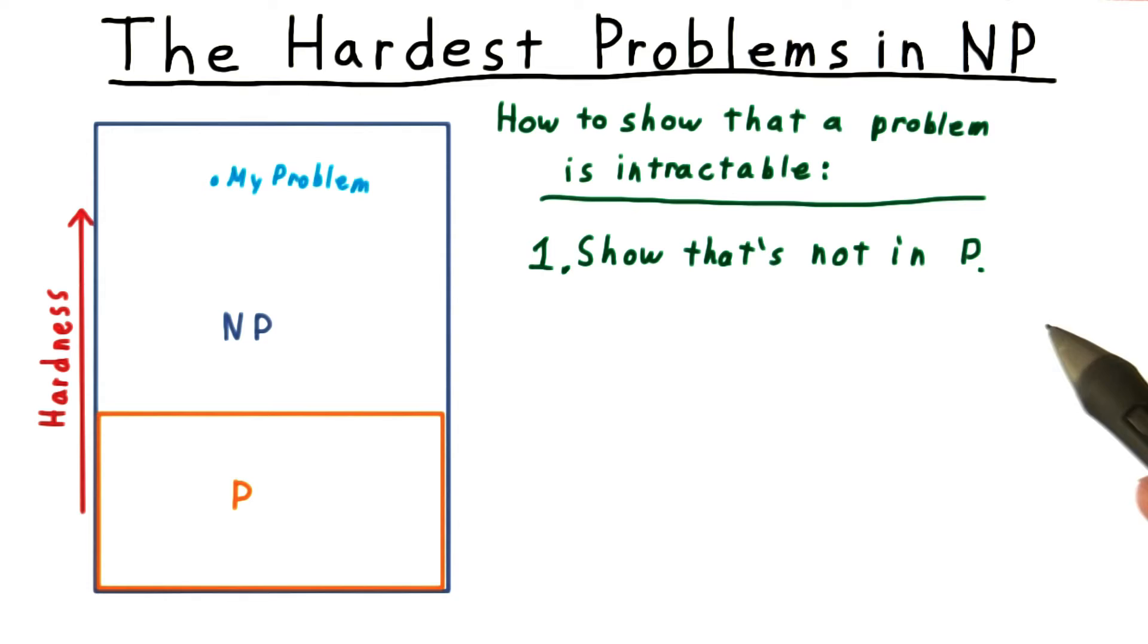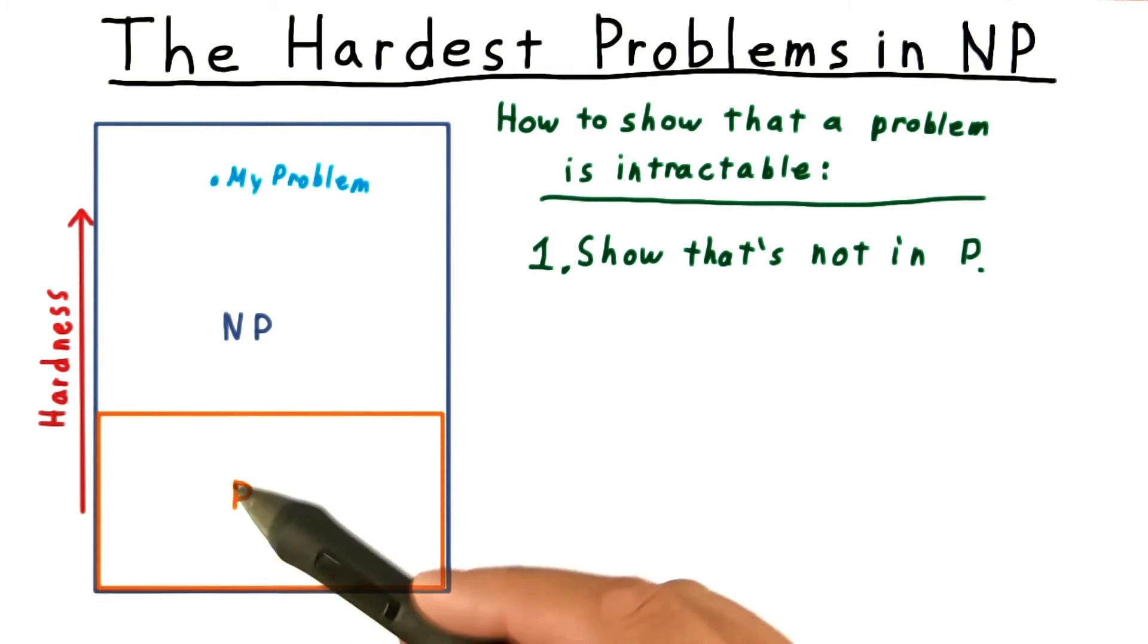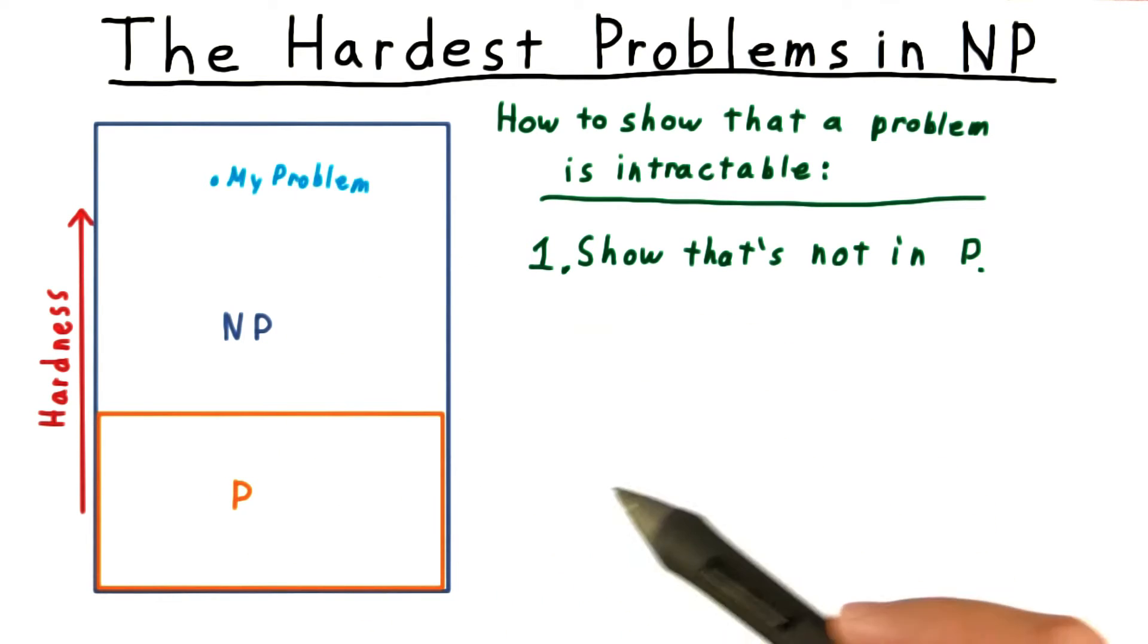One idea is to show that the problem is not in P. That would indeed show that it is intractable, but it would do much more. It would show that P is not equal to NP. You would be famous.